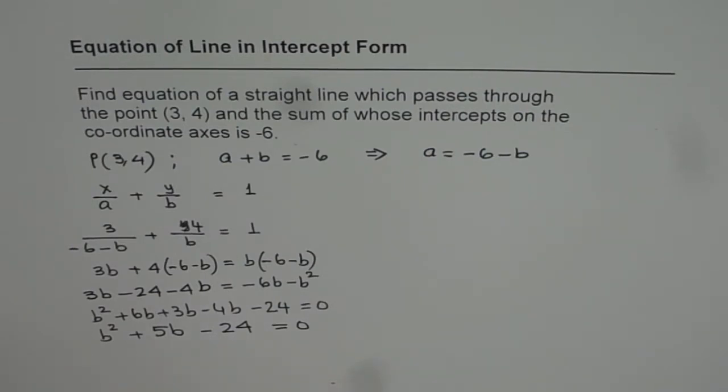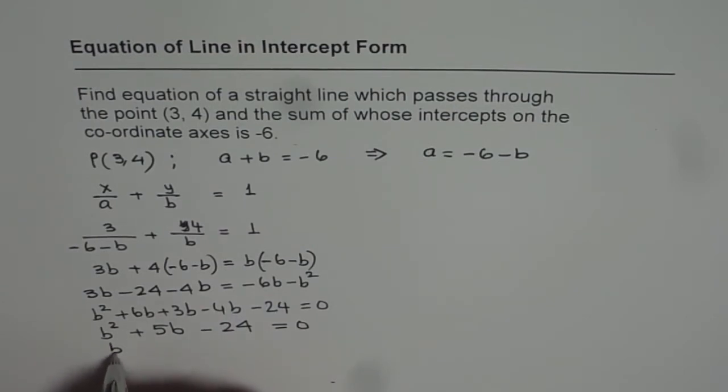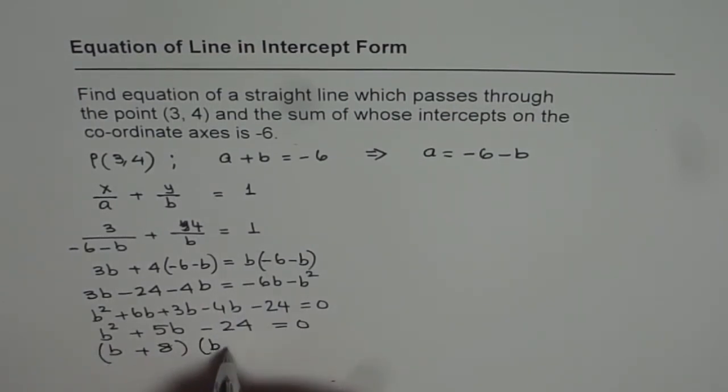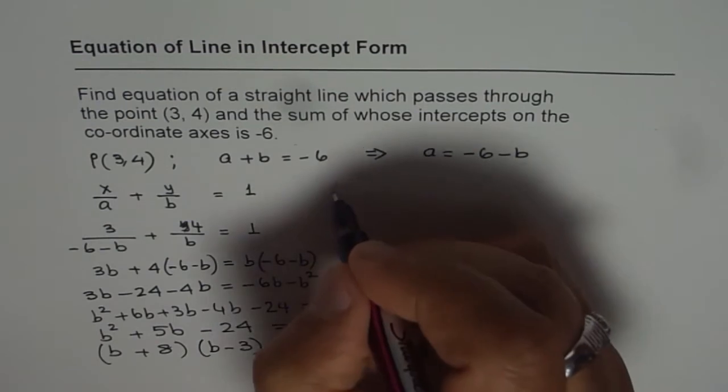It could be 8 and 3. 8 times 3 is 24. When we add them, we should get 5. That means 8 is positive. So we can write this as (b + 8)(b - 3) = 0. That is the factored form of our quadratic equation.